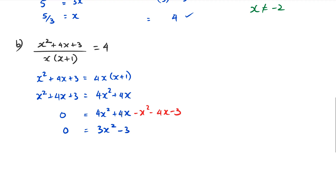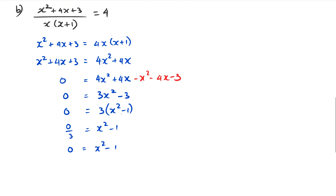We don't need the calculator here because we can rewrite 3x² − 3 = 0 by dividing through by 3 to get x² − 1 = 0. Factorizing gives (x − 1)(x + 1) = 0, so x = +1 or x = −1.